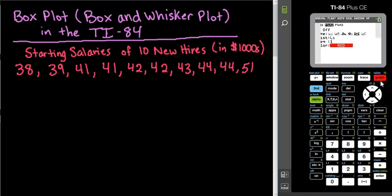When I hit graph, a lot of the times I'm not going to be able to see anything because my window is set to something else. So what I want to do is hit the zoom button and nine, and it will automatically format it so that my box plots show up.